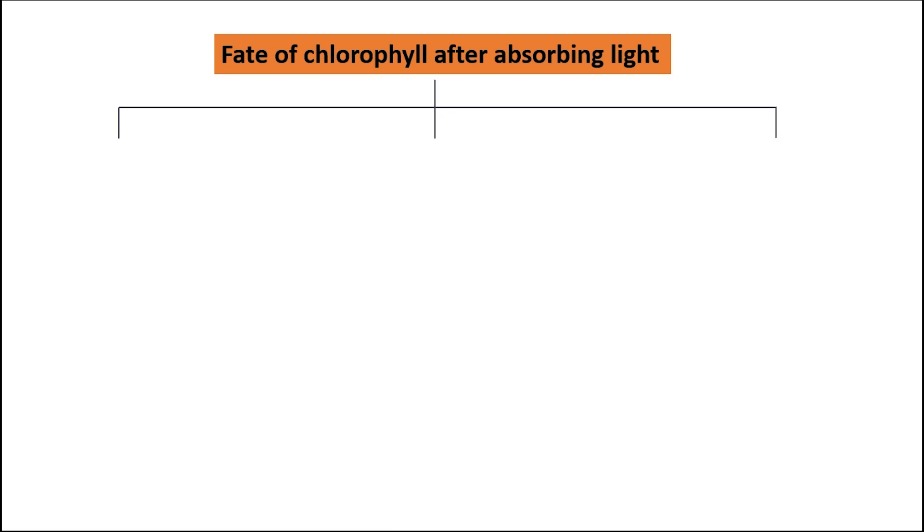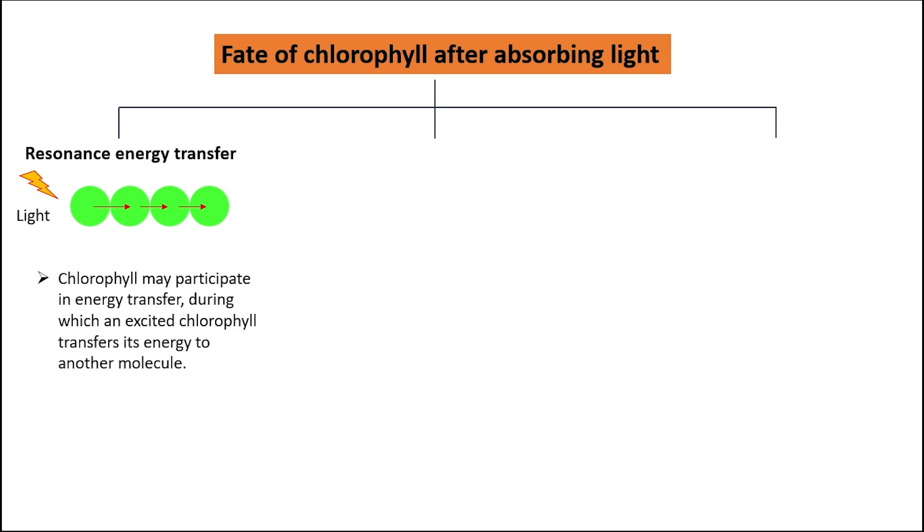Excited chlorophyll can perform three activities. One, it can undergo resonance energy transfer. In this process, chlorophyll may participate in energy transfer, during which an excited chlorophyll transfers its energy to another molecule.